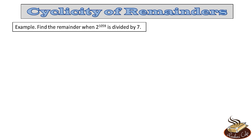Welcome to the next video on remainders. As promised in the last video, let's study the concept of cyclicity of remainders. So let's return to the previous question, where we had to find the remainder when 2 raised to the power 1059 is divided by 7.